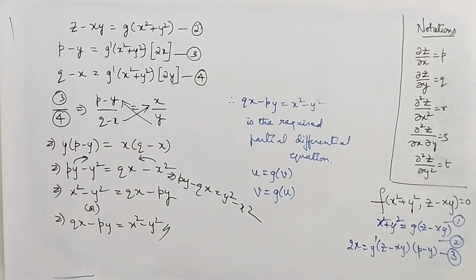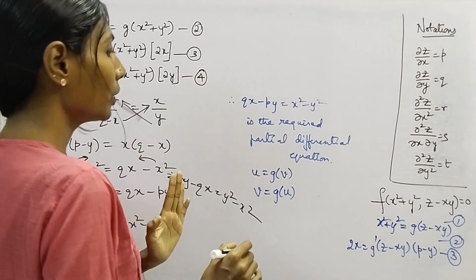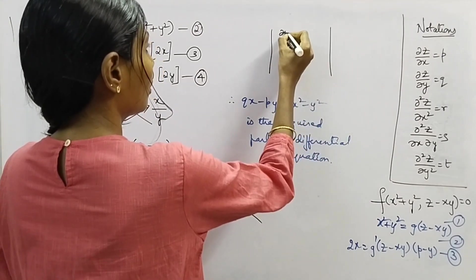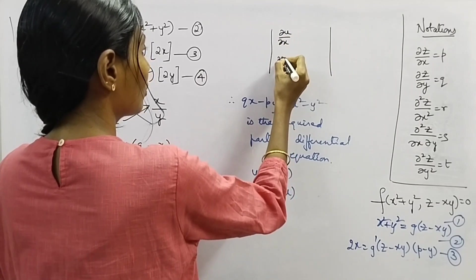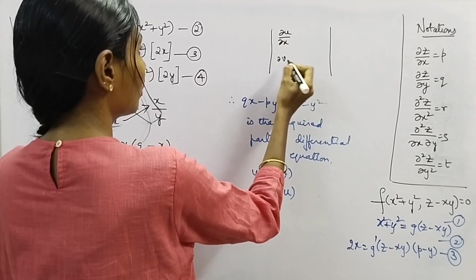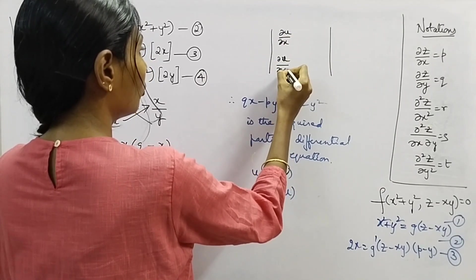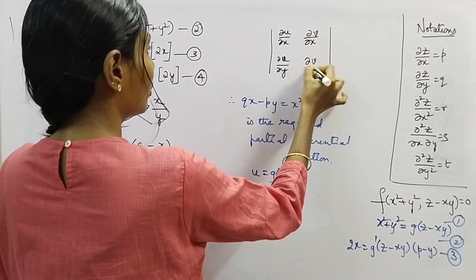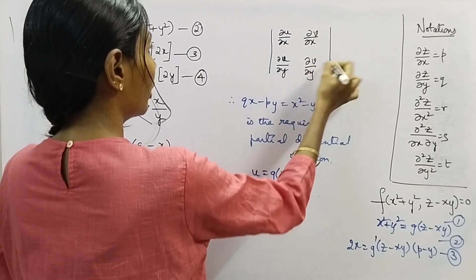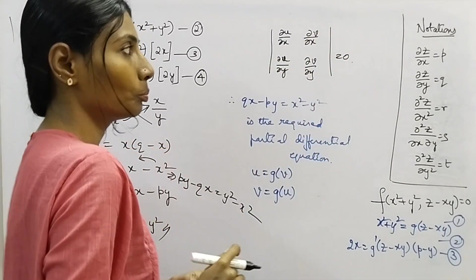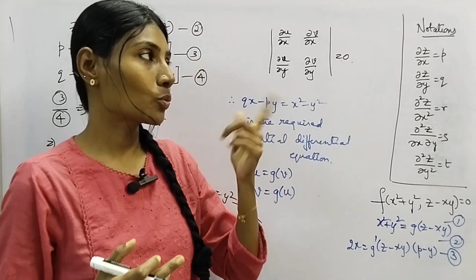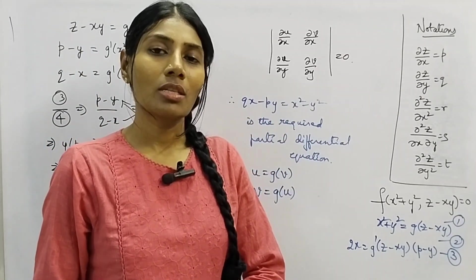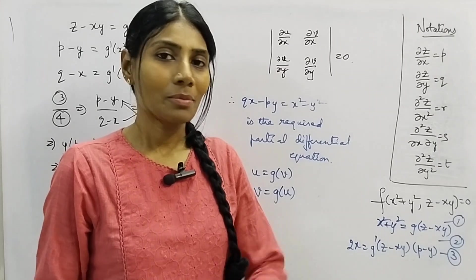We can also solve for the PDE using another method — the determinant form involving ∂u/∂x, ∂u/∂y, ∂v/∂x, and ∂v/∂y set equal to zero. We'll see this in the next video. That's all for now — I hope you understood. See you in the next video, bye!